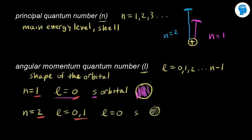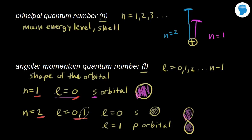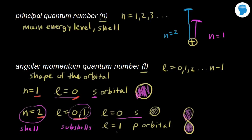In the second main energy level, or second shell, we also have l equal to one. When l equals one, we're talking about a p orbital. The shape of a p orbital is a dumbbell shape — or bow tie — a three-dimensional region of space where the electron is most likely to be found. These are sometimes called subshells: within the second shell, l equal to zero is an s orbital subshell, and l equal to one is a p orbital subshell.